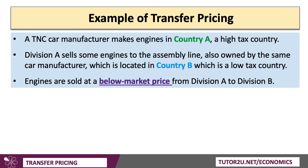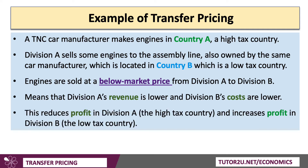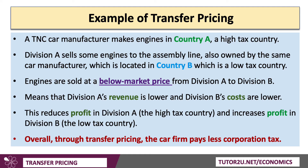Those engines might be sold at a below-market price from Division A to Division B. Divisions A and B are part of the same company, but based in different countries. If engines are sold at a below-market price — transfer pricing — that means Division A's revenues will be lower in Country A, and Division B's costs will also be lower. This reduces the profit that the subsidiary in Division A is making in the high tax country, so they book lower profits in the high tax country but increase profits in Division B, which is in the low tax Country B. Through transfer pricing, the car firm pays less corporation tax.